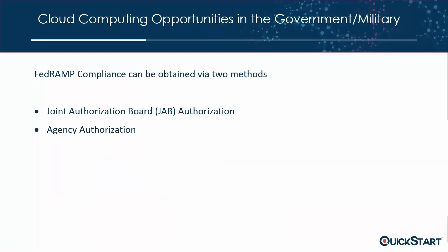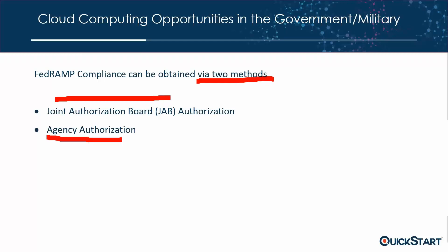When it comes to compliance, it comes down to two methods. There's the JAB board, where as the service provider you go through the JAB requesting your cloud service be approved for all agencies, and the board gives you a provisional authority to operate — or you have to fix what needs to be fixed. Alternatively, an agency can sponsor you directly, saying they need the cloud service and will handle the authorization themselves.